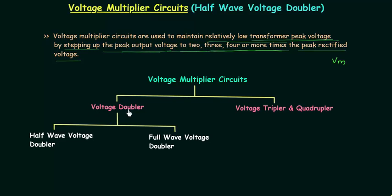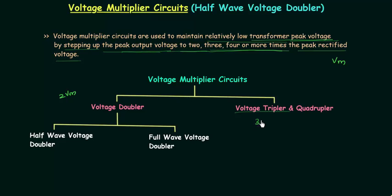There are two types of voltage multiplier circuits. The first one is voltage doubler, and the second one is voltage tripler and quadrupler. In the voltage doubler circuit we have half wave voltage doubler and full wave voltage doubler. By using a voltage doubler circuit we can have twice Vm. By using a voltage tripler we can have three times Vm, and by using a voltage quadrupler we can have 4 times Vm.